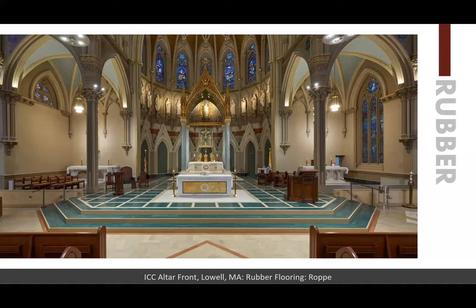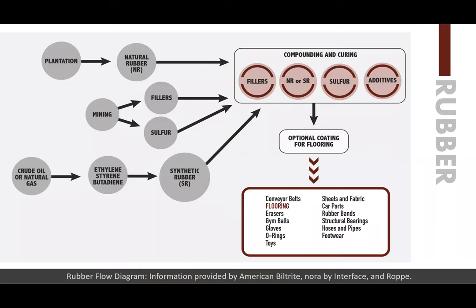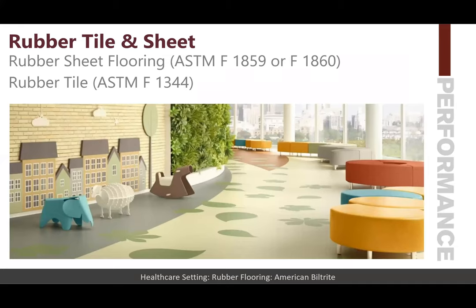For rubber flooring: natural rubber comes from plantations. Synthetic rubber (SBR) comes from crude oil or natural gas for ethylene, styrene, and butadiene. Most floorings are made from synthetic rubber, sulfur, and additives. The ASTM standards are ASTM F1859 for rubber sheet flooring without backing and ASTM F1860 for rubber sheet with backing. Rubber tile has its own performance methodology: ASTM F1344. Rubber is also a calendared and vulcanized product — the vulcanization process includes adding heat, creating sheet flooring that can be cut into tiles or left in sheet form.